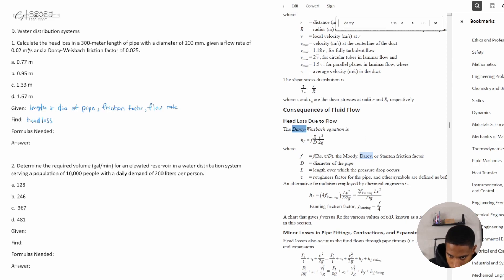So we are given Darcy or Stanton friction factor, which is f. Do we have L? We're given the length, 300 meters. Diameter, which is d, we're given. We're not given v, and we know what g is, which is 9.81 meters per second squared, or gravity, right?